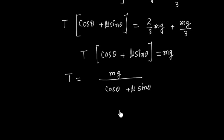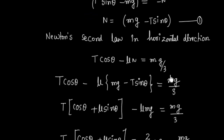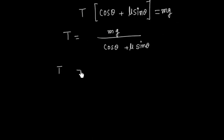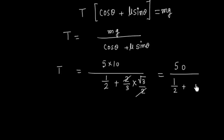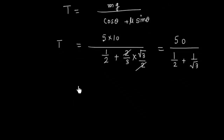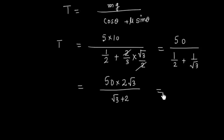Plugging in the values: mass = 5 kg, g = 10, theta = 60°. So T = 50 / (cos 60 + (2/3)·sin 60) = 50 / (1/2 + (1/√3)). Simplifying further: T = 100√3 / (√3 + 2) Newton.